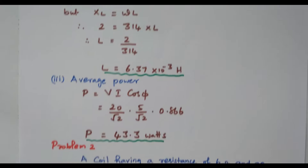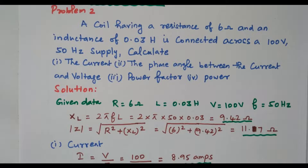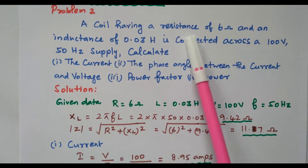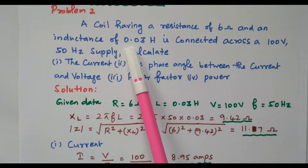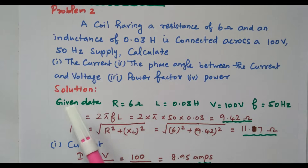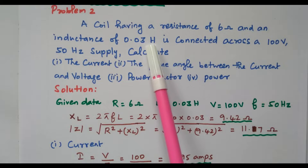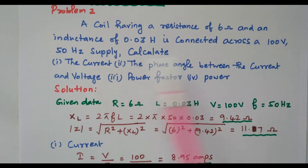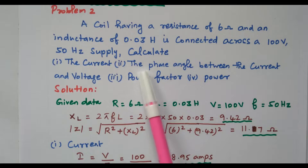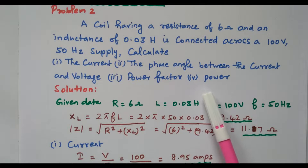The second problem: a coil having resistance of 6 ohms and inductance of 0.03 Henry is connected across a 100 V, 50 Hz supply. We need to calculate the current, phase angle between current and voltage, power factor, and power.